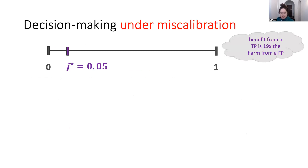So let's talk about decision-making — basically the selection of thresholds under miscalibration — when we anticipate that the predictor we have access to is not necessarily perfectly calibrated. Here I'm considering a case where the therapeutic threshold J* is 0.05, which tells us something about the cost structure: the benefit expected from making true positive predictions is much greater than the harm from making incorrect treatment decisions.